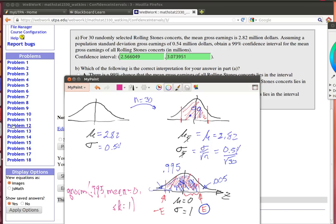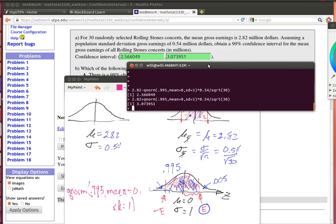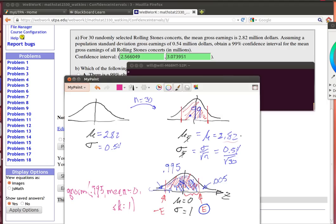So I use those calculations to do the following. I think I've already done that in R right here. Okay, there's the 2.82, that's the mean.